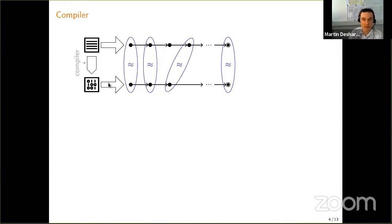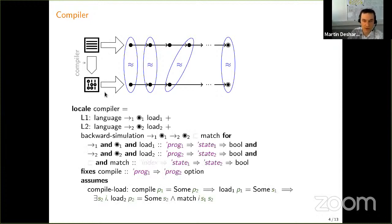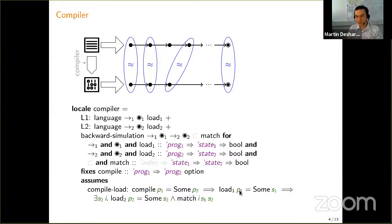The compiler is essentially nothing more than a function from the static representation of the first language to the static representation of the second language. I import an instance of a first language, an instance of a second language, I assume there will be some backward simulation between the two with respect to some matching relation, and then I fix the existence of this partial compilation function. This function needs the property that if compilation of a program succeeds and the initial program was valid such that it can be loaded to a dynamic state, then so is the case for the compiled program — it can also be successfully loaded — and the two initial dynamic states will be in the simulation.